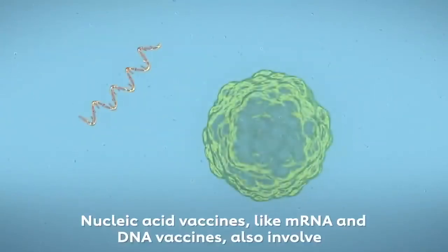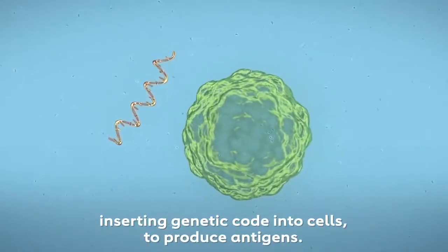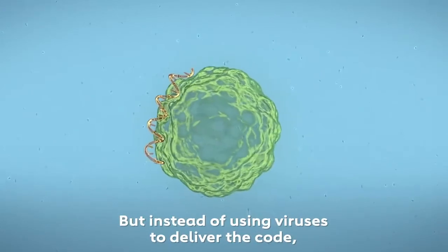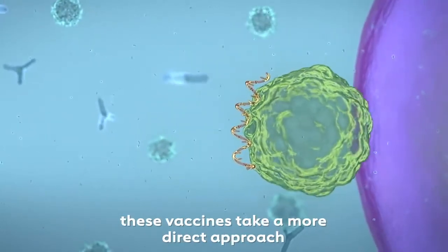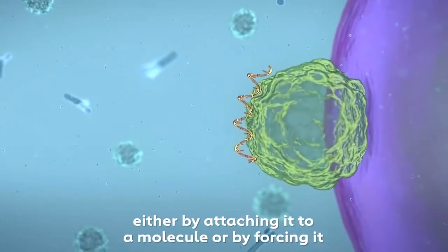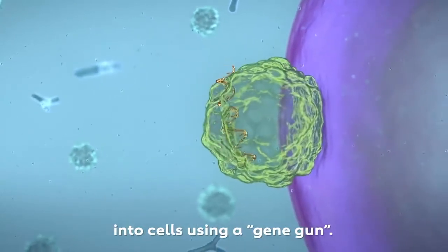Nucleic acid vaccines, like mRNA and DNA vaccines, also involve inserting genetic code into cells to produce antigens. But instead of using viruses to deliver the code, these vaccines take a more direct approach that involves inserting the code directly into cells, either by attaching it to a molecule or by forcing it into cells using a gene gun.